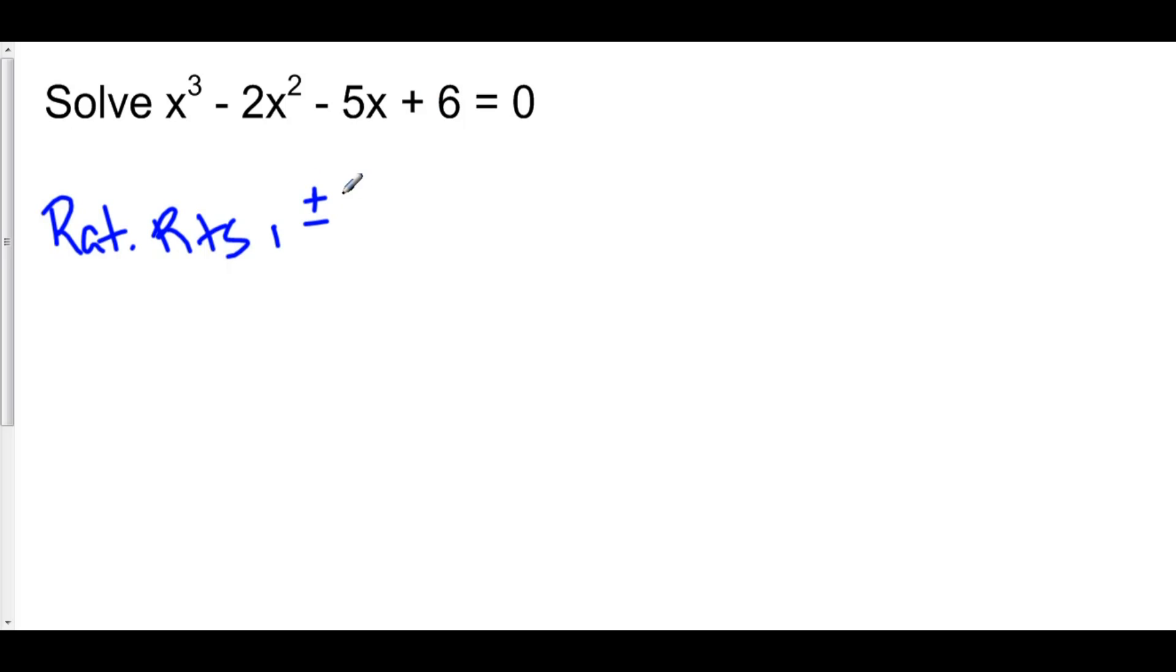Those are 1, 2, 3, and 6, all over all factors of 1, which is 1. So our rational roots are ±1, ±2, ±3, and ±6.